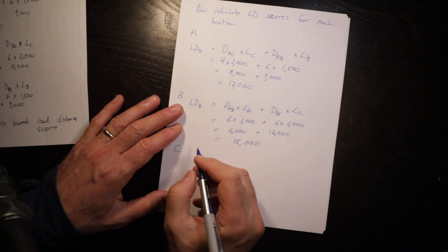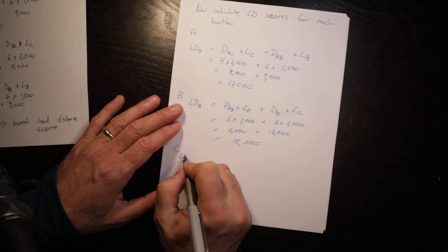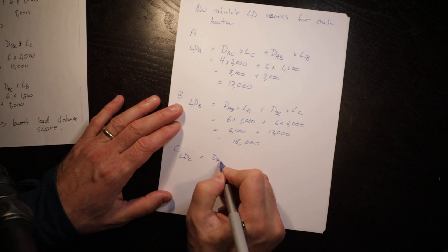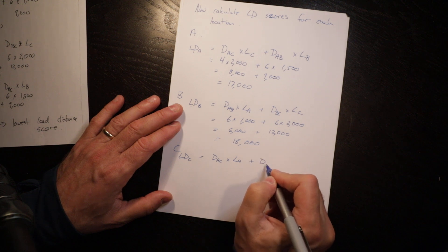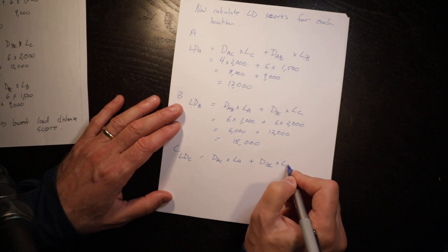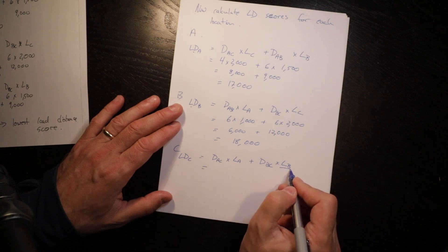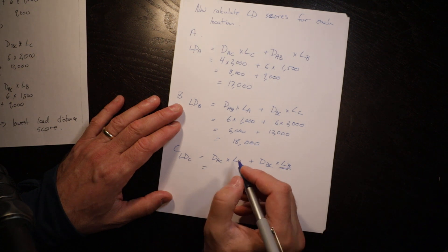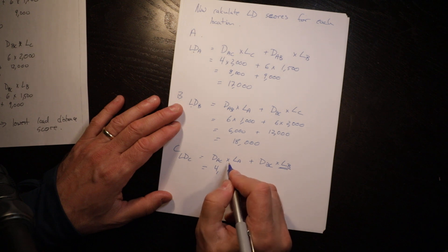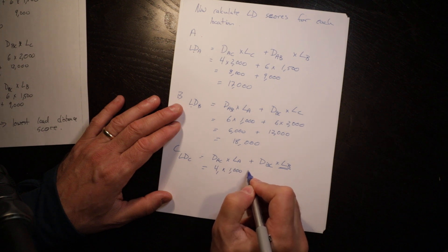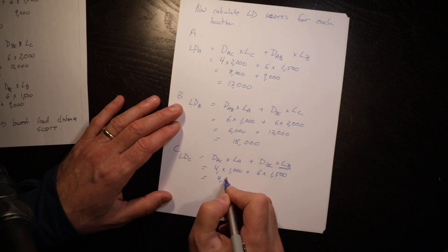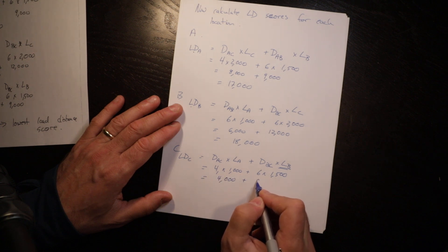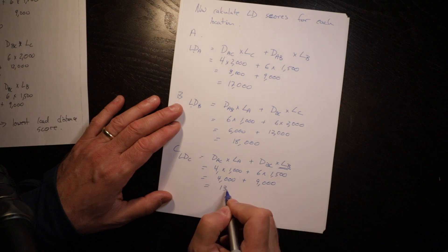And for C, load distance C equals distance from A to C times the load of A because we're going to C, plus the distance from B to C times the load of B. And again, this is where students go wrong. They use the wrong load. It's the load that's coming to that center. 4 times 1,000 plus 6 times 1,500 equals 4,000 plus 9,000 equals 13,000.